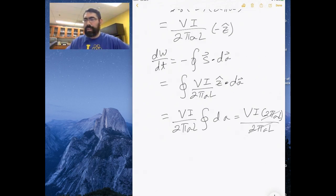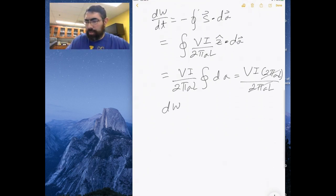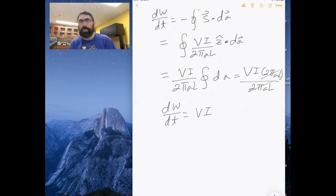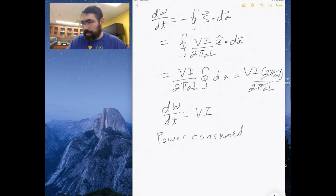So those terms cancel and what we're left with is the power consumed by this wire is the voltage times the current, or the potential times the current. Which makes sense because that's actually the power that is generated by the battery. The power that a battery generates is the amount of voltage in the battery times the current that's flowing out of that battery. So in the end, the power consumed is equal to the power generated. Energy is conserved.